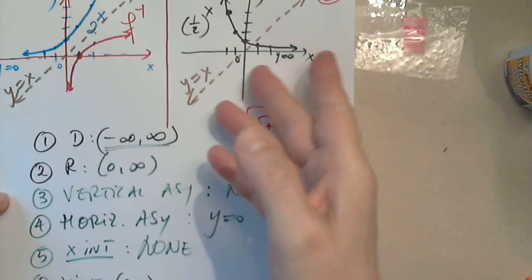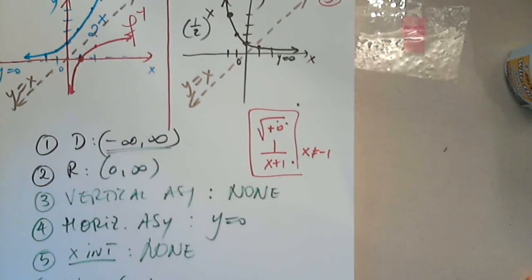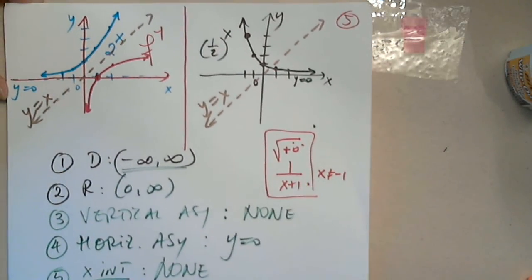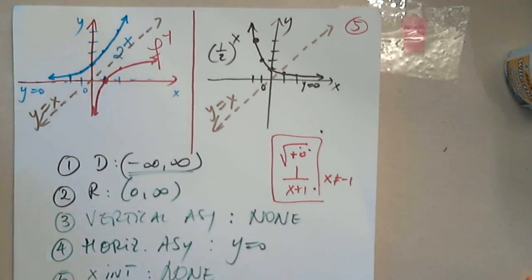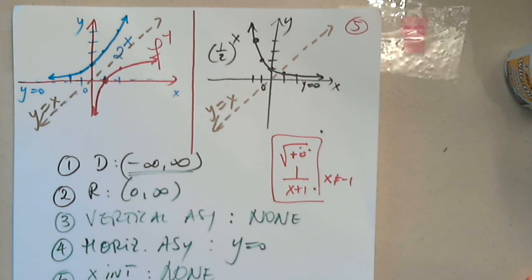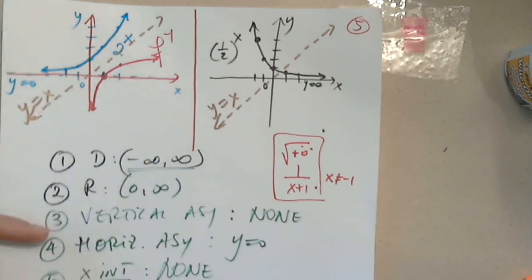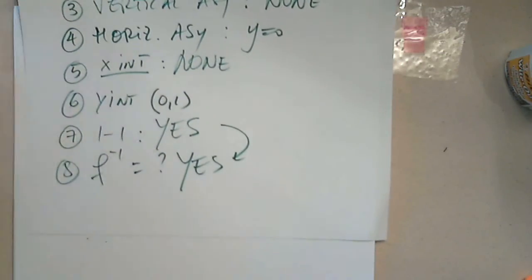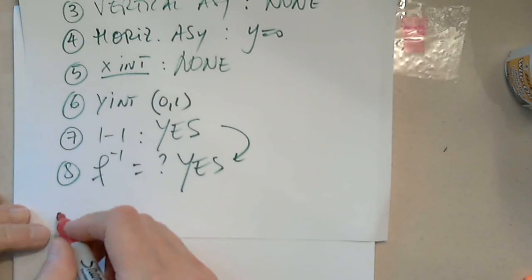Now give me a couple of points so I can graph the inverse of (1/2)^x. And then I have one more thing to add.